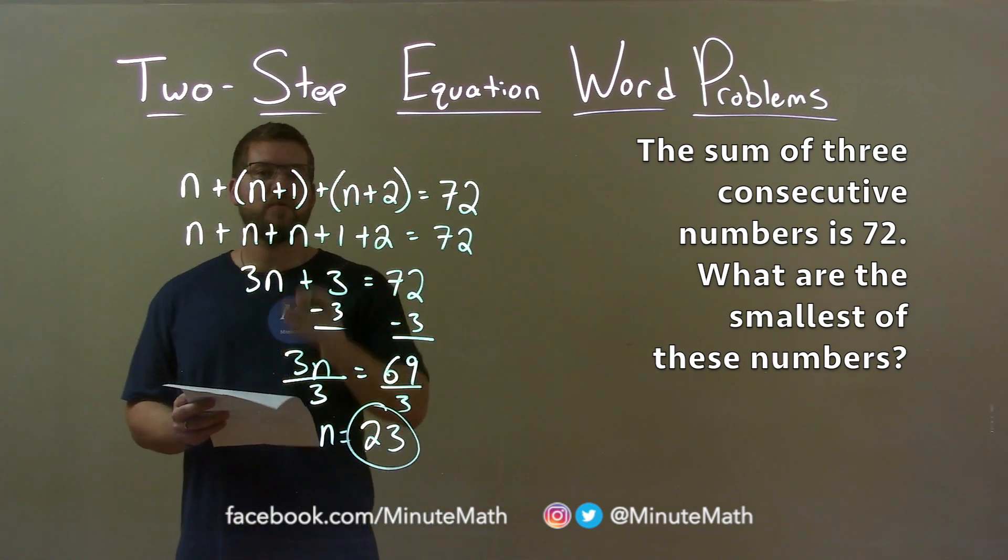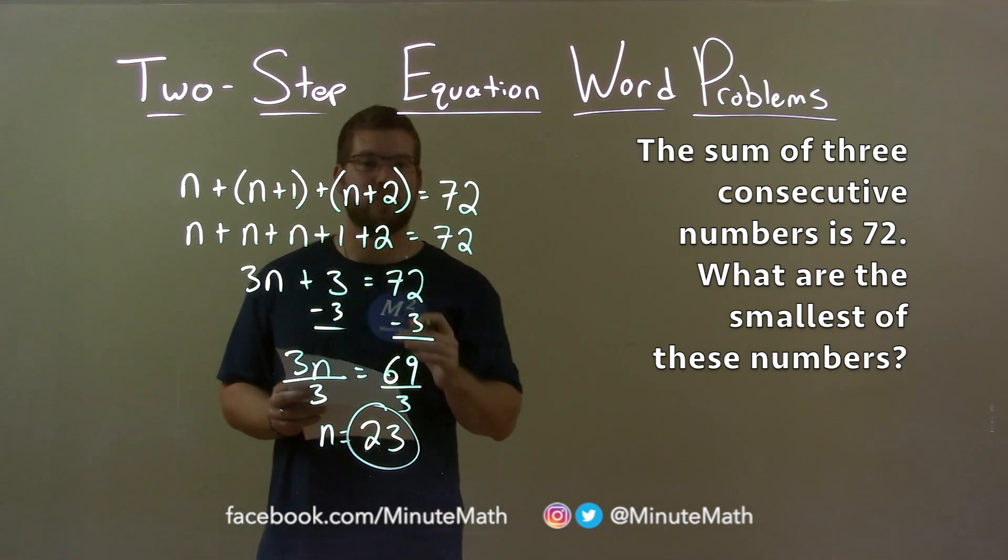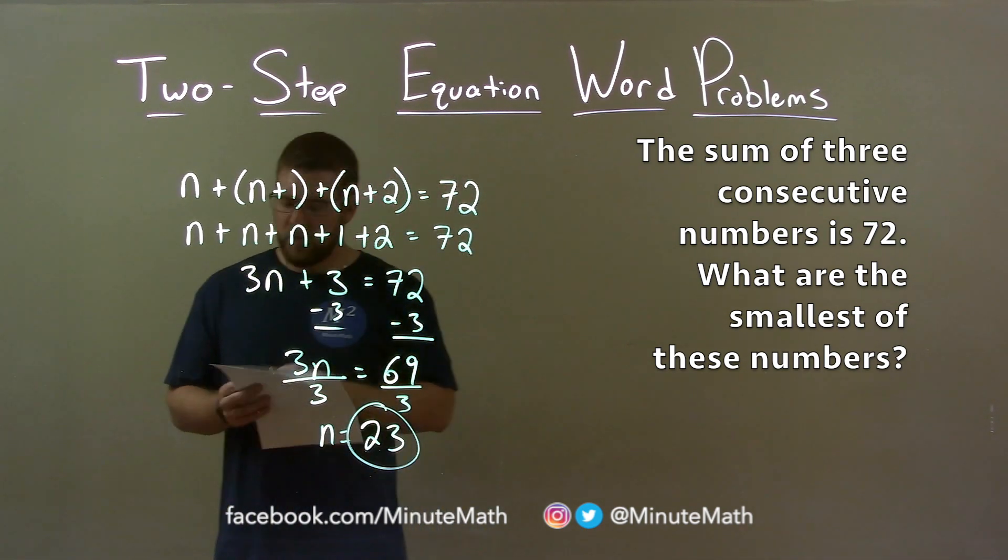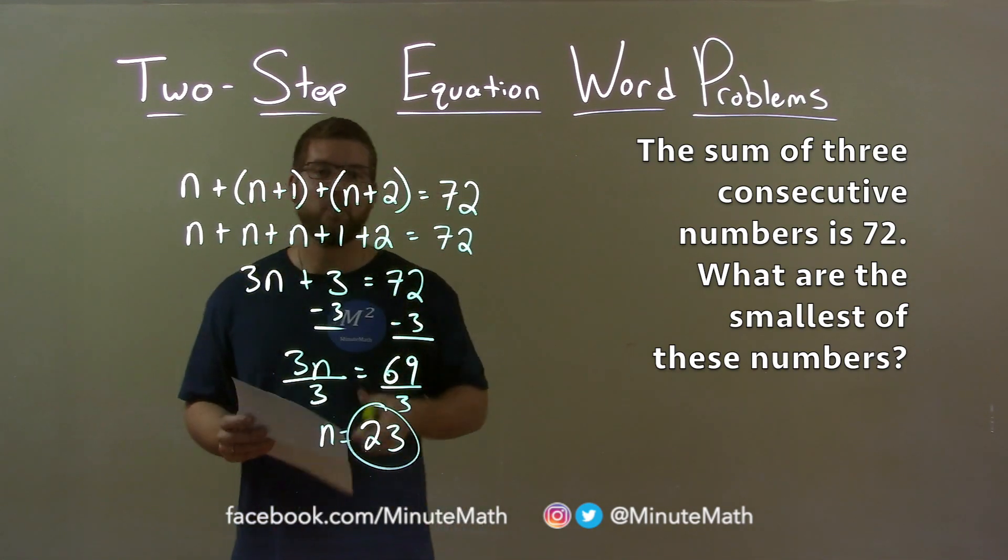n being one of the numbers, n plus 1 the next one, n plus 2 the one after that, equals 72. With that information, I solved for n and got n to be 23, our final answer.